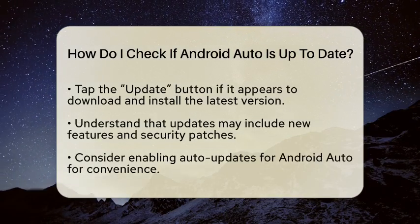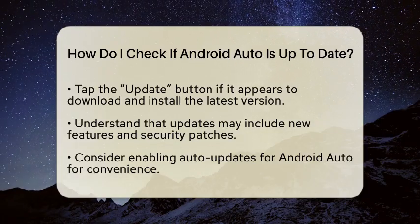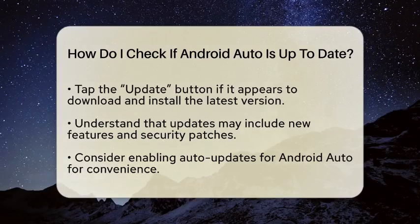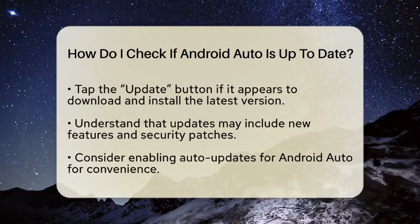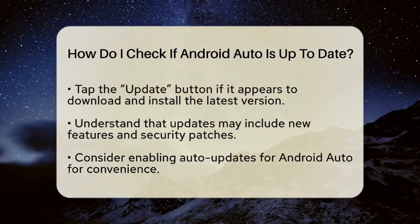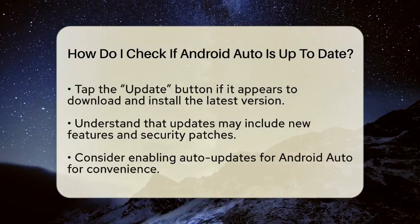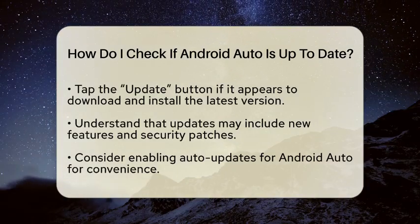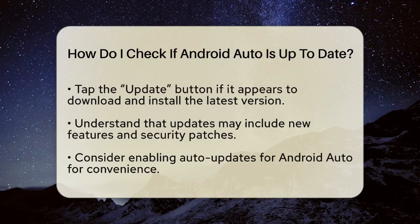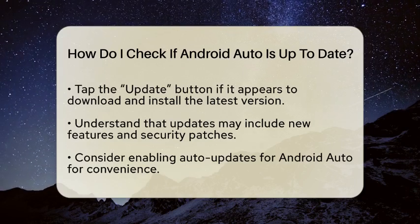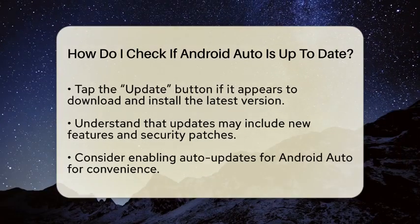Now that you are on the Android Auto app page, look for an Update button. If you see this button, it indicates that there is a newer version of the app available for download. Simply tap the Update button to start downloading and installing the latest version. This step is crucial because updates often include new features and important security patches.